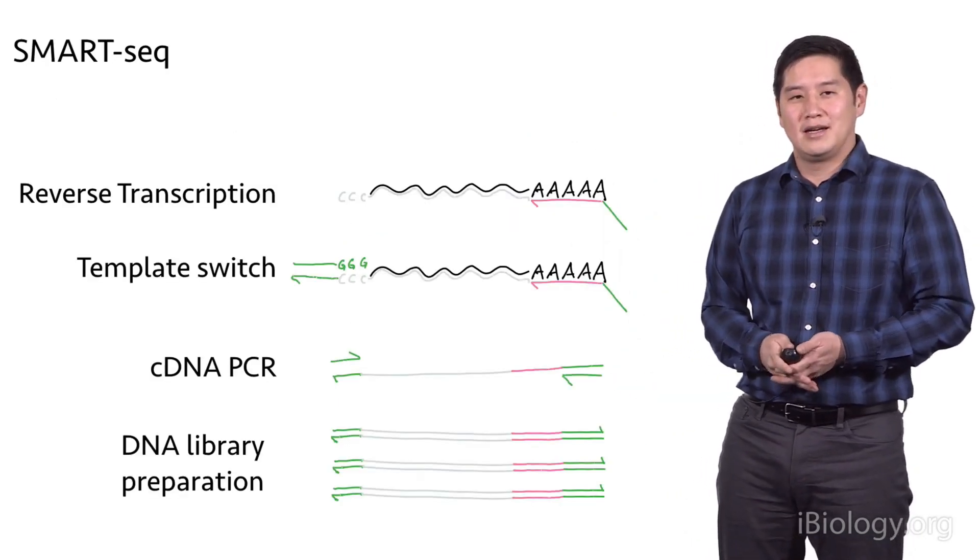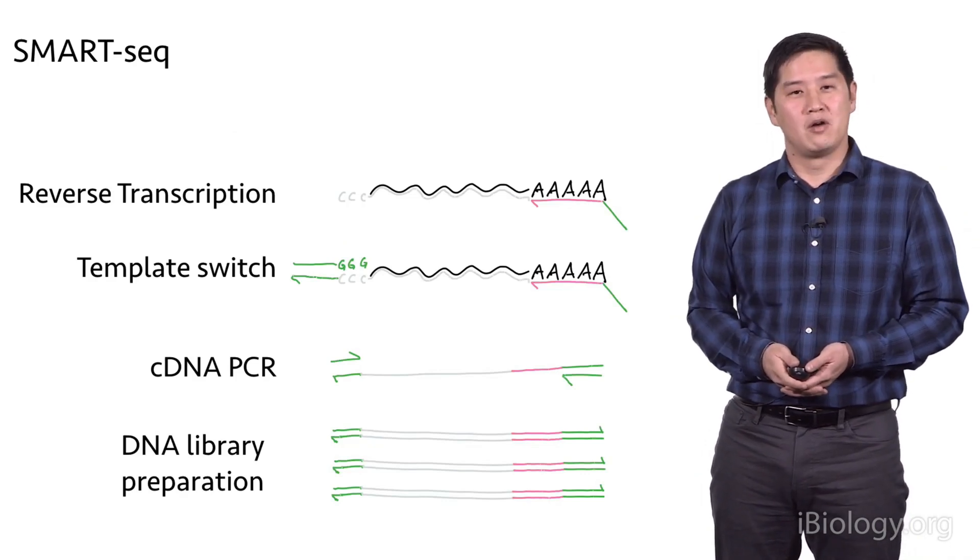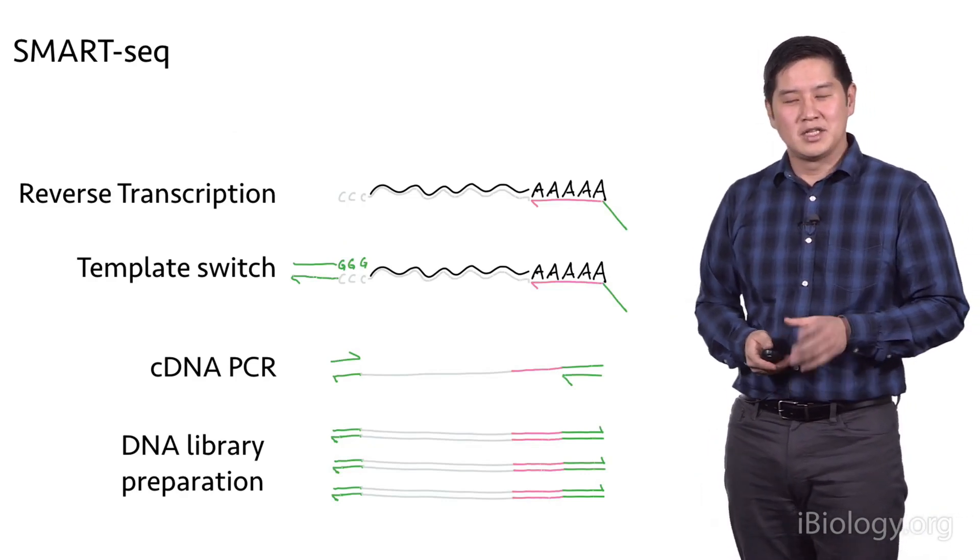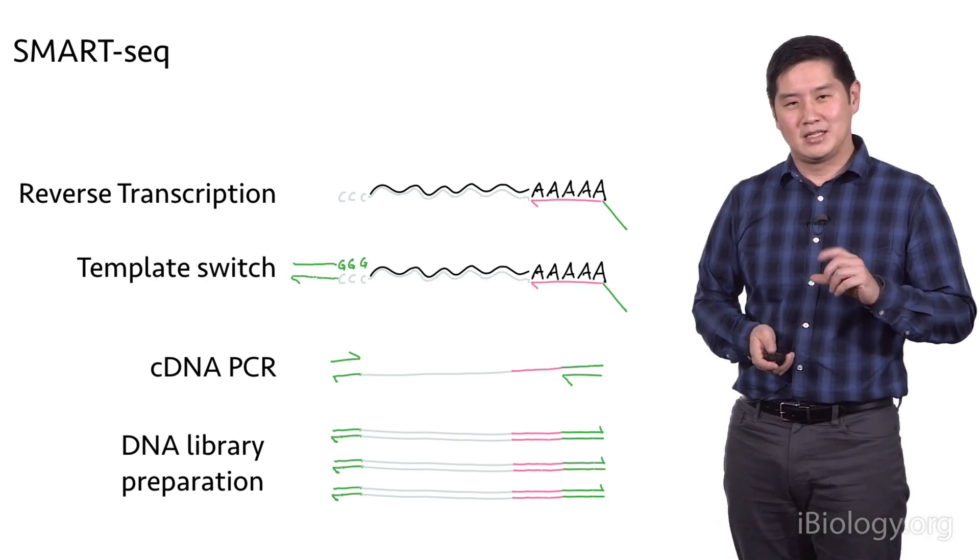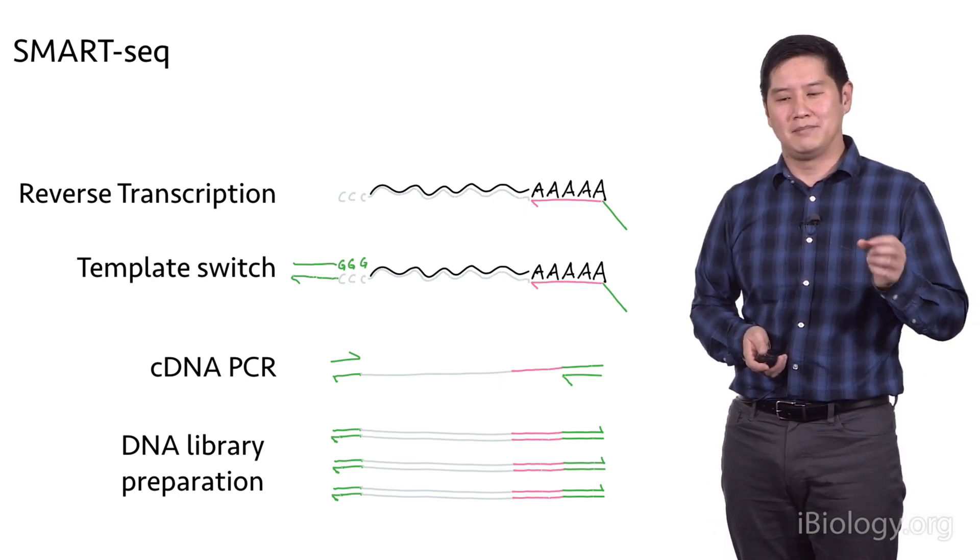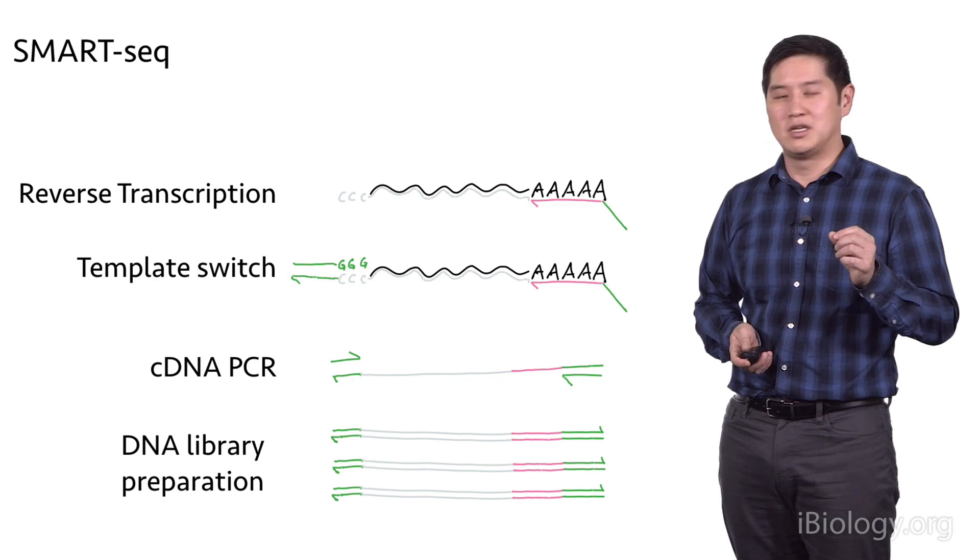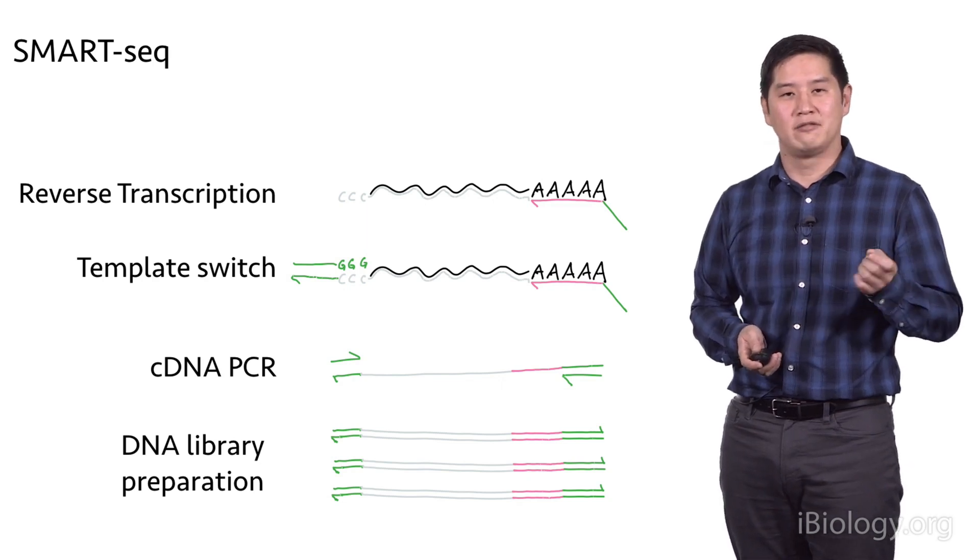The next method of RNA library preparation is called SMART-seq. This uses some of the same enzymes as the TruSeq RNA preparation, but it has one advantage in that you don't have to do an RNA enrichment step.